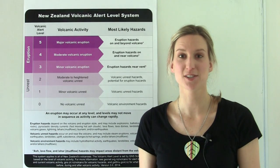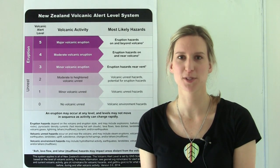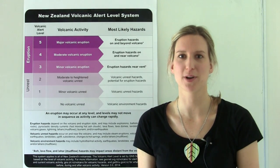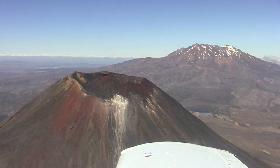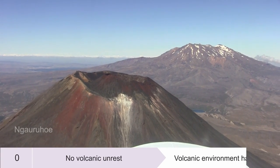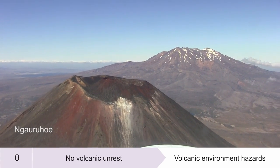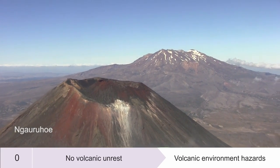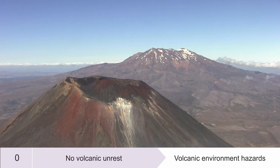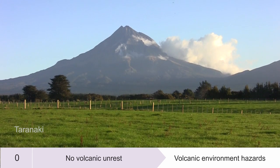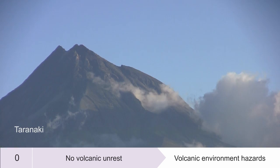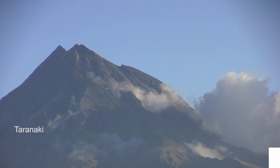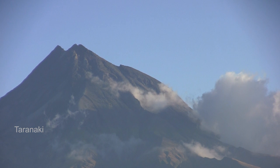So let's look at some examples of volcanoes showing activity at each of these levels. A volcano at alert level zero is a volcano where nothing is happening — we just have the typical environmental hazards and there are no volcanic hazards at that volcano.